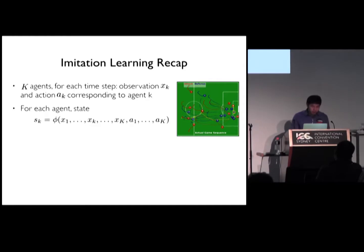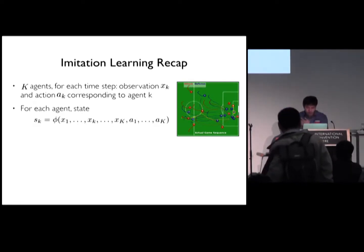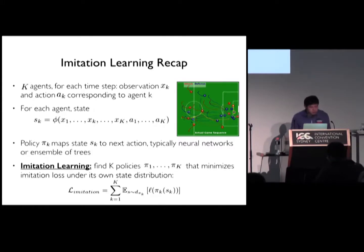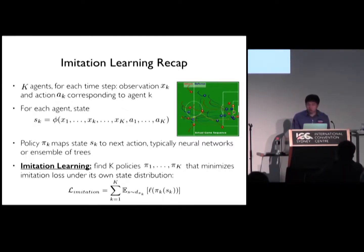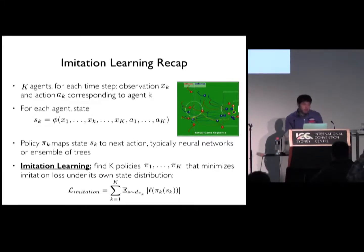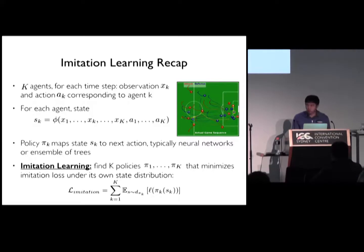For each agent, the state — in a simplified way — can be viewed as a function of its own observation and actions, as well as the observations and actions coming from other agents in the environment. For example, you can view observation as a history of positions, and the actions can be the next position or the velocity. A policy, which simply maps state to actions, is typically represented by neural nets or ensemble decision trees. In imitation learning, the goal is to minimize the imitation loss, which measures the divergence between the actions taken by the policy and the actions taken by the demonstrator. The loss is measured under the state distributions induced by the learning policy, denoted here by D_pi. This is the key difference that makes imitation learning generally more challenging than conventional supervised learning, because the usual IID assumptions no longer hold for the sequential prediction setting.